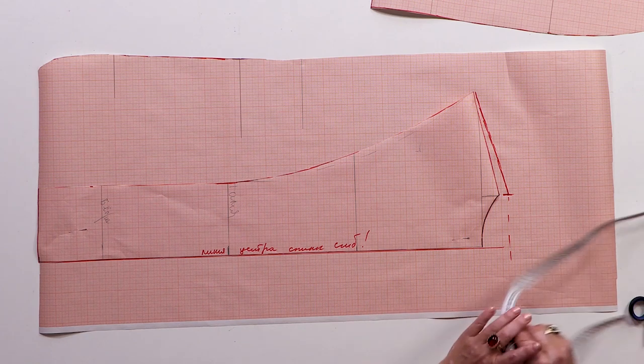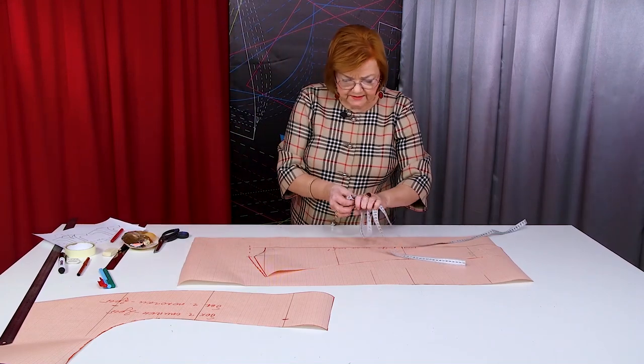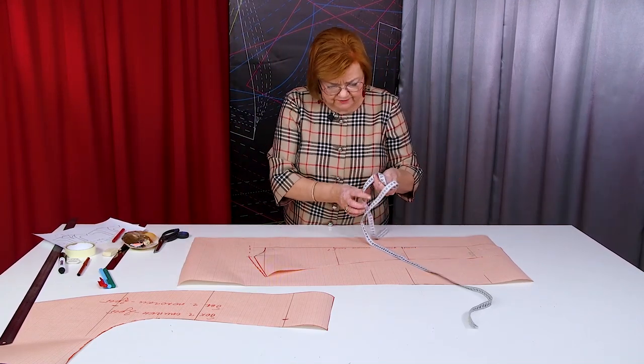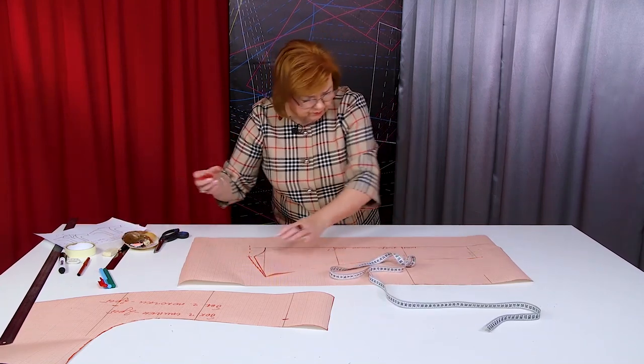Next, I need to measure and mark 40 cm down from this point. This is where the underbust seam is going to be placed. You know what? I'll better outline the pattern first.